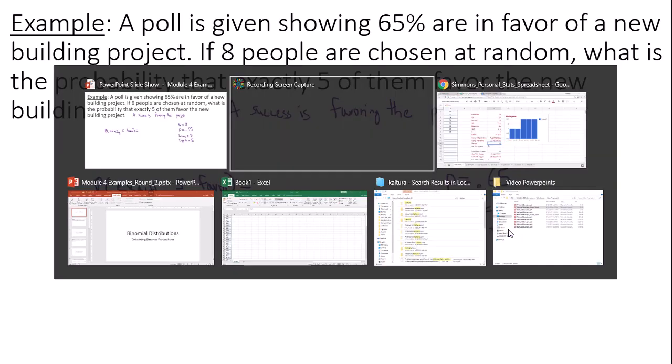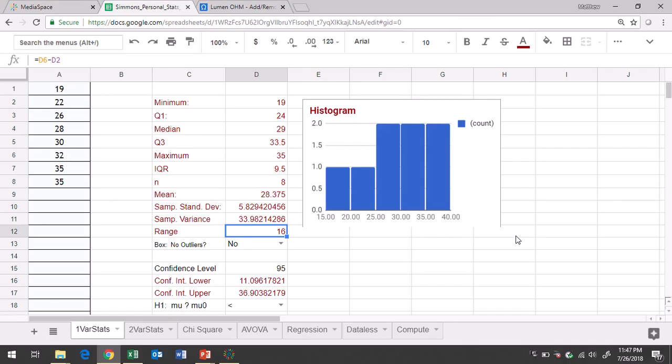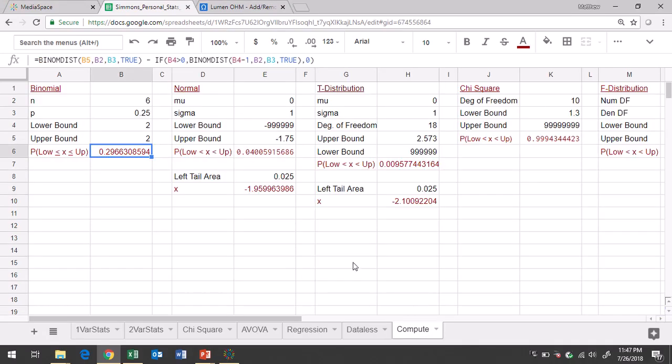So this is what we put into Google Sheets. You go to the compute tab, the binomial region, type in your number of trials, which is eight, probability of a success, 0.65, and lower bound and upper bound, both of five.